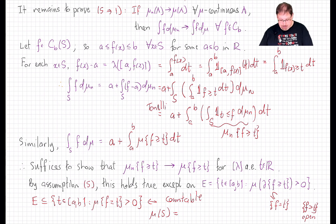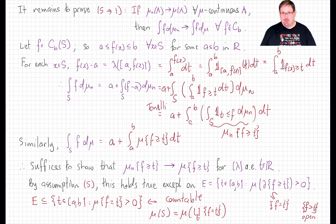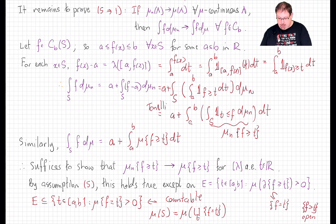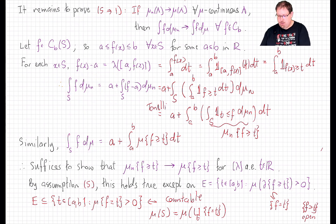So the integrand converges to the limit except on a countable set of t's, which has Lebesgue measure 0. Therefore we do get that the integrand converges almost everywhere. Since those functions are all bounded above by 1 and we're integrating on a bounded interval, by the dominated convergence theorem we conclude that this integral converges to that one. This concludes our proof of the Portmanteau theorem.